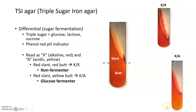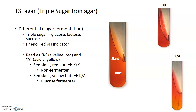In some cases, you'll see a color change to yellow in the butt portion while the slant remains red. This is reported as K-A and indicates glucose fermentation. In the anaerobic environment, a K-A bacterium turns glucose into lactic acid, which makes the media yellow. But once it runs out of glucose, it can't ferment lactose or sucrose, so the slant remains red while the bottom turns yellow — indicating glucose fermentation only.